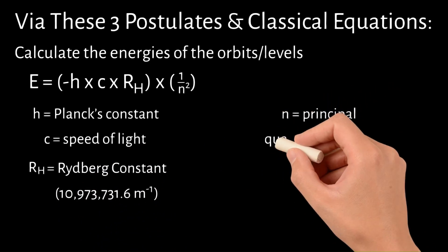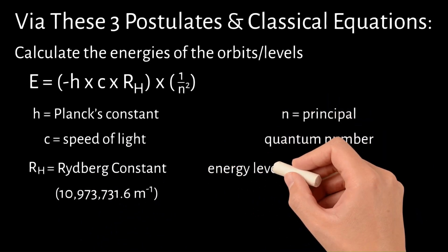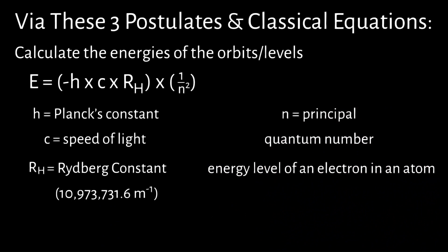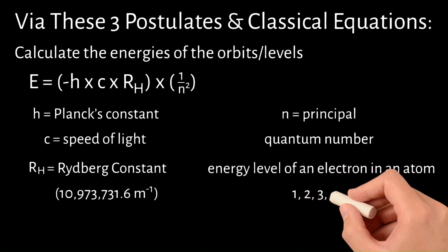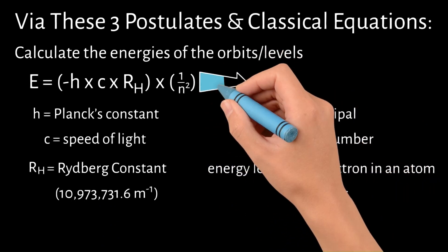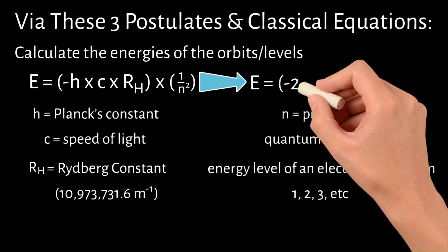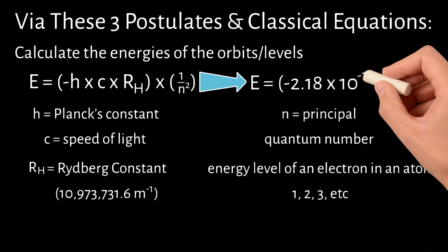and N equals the principal quantum number, which is the energy level of an electron in an atom and relates to the whole number values of 1, 2, 3, etc. This equation simplifies to E equals negative 2.18 times 10 to the negative 18th joules times 1 divided by N squared.